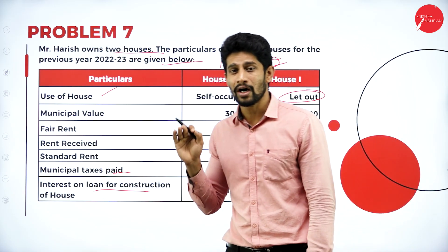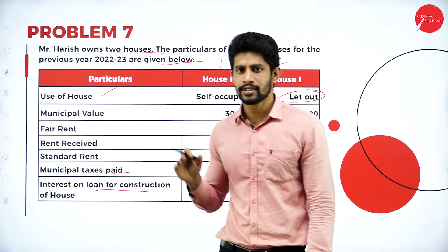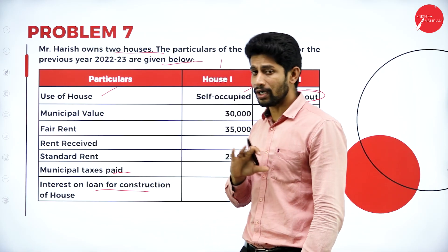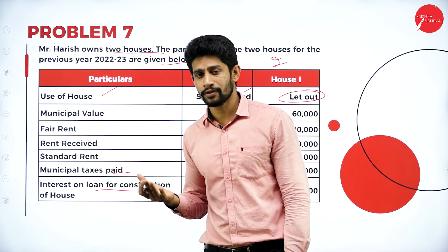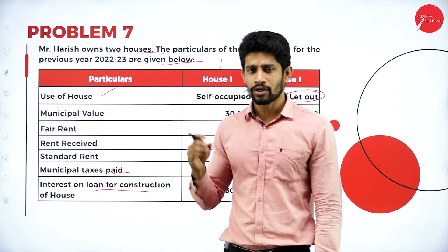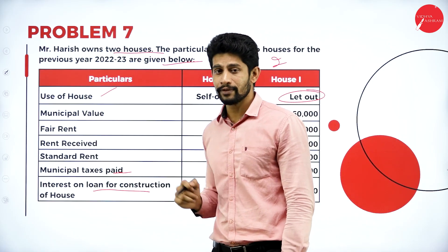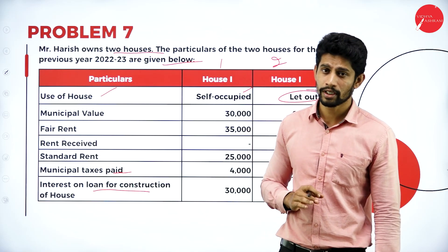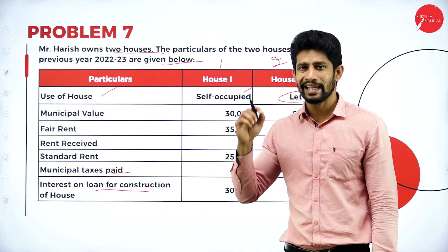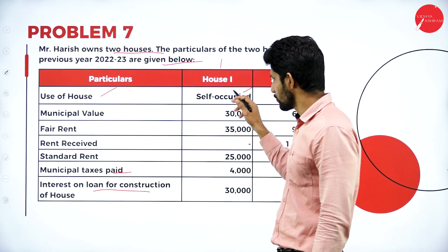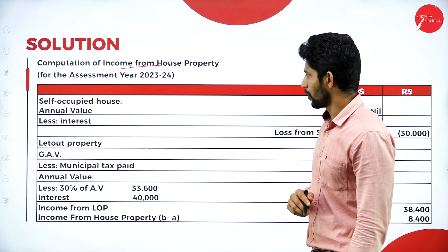Regarding the municipal tax: they have not mentioned whether it is paid by the tenant or by the owner. The person staying in a rented house is called the tenant. So, if nothing is mentioned, you have to assume that the municipal tax given in the problem is paid by the owner of the property, that is Mr. Arish. Using this information, you are supposed to compute the income from house property from house one and house two.